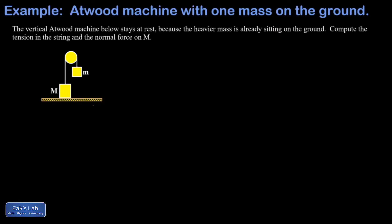In this problem we're given a vertical Atwood machine and the heavier mass is already resting on the ground. This means nothing is going to happen - it's not going to accelerate. But we're asked a couple interesting questions: we want the tension in the string and we want to get the normal force on the big mass. So let's